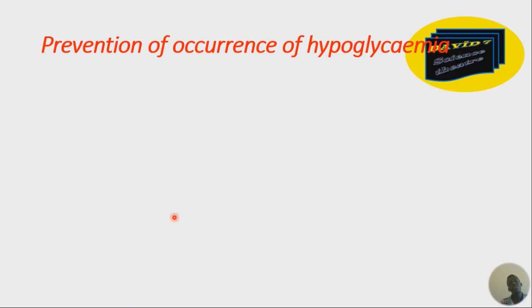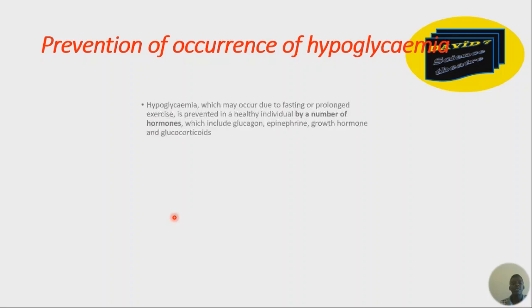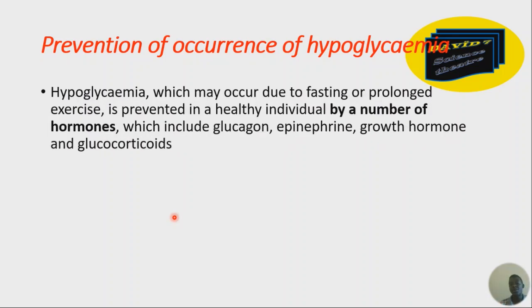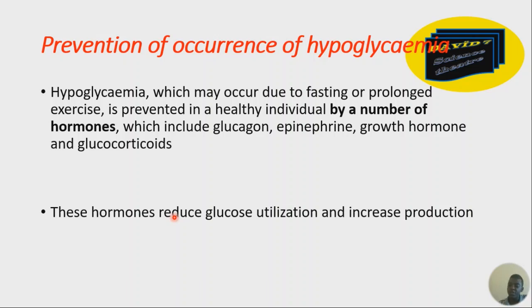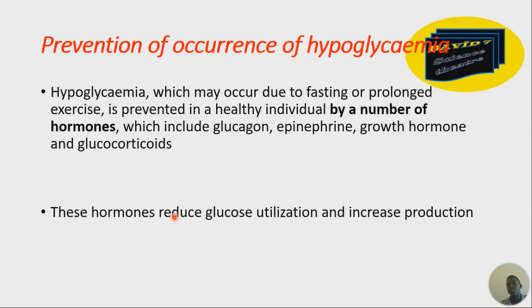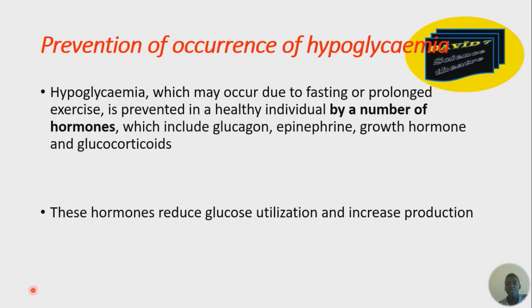How does the body prevent the occurrence of hypoglycemia? Hypoglycemia, which may occur due to fasting or prolonged exercise, is prevented in a healthy individual by a number of hormones including glucagon, epinephrine, growth hormone, and glucocorticoids such as cortisol. These hormones reduce glucose utilization and increase glucose production. A key point: hyperglycemia is reduced by only one hormone — insulin — but hypoglycemia is reduced by four hormones.